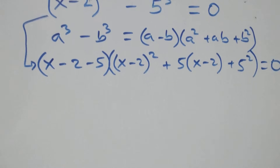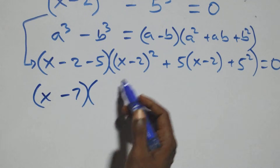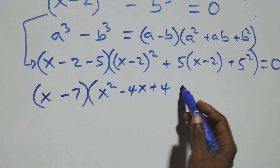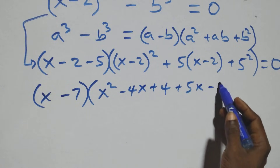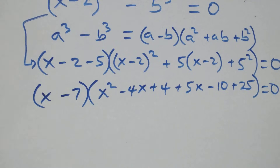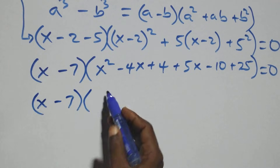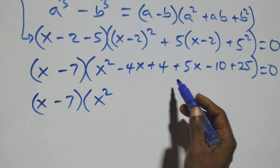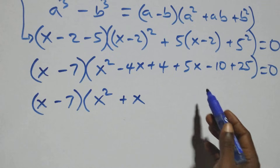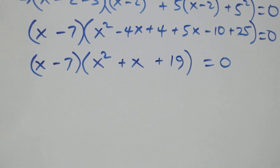This gives us (x minus 7) times the bracket. Expanding: (x-2)² gives x² minus 4x plus 4, plus 5(x-2) gives plus 5x minus 10, and plus 25. Combining: x² plus x, and 4 minus 10 plus 25 equals 19. So we have (x-7)(x² plus x plus 19) equals 0.